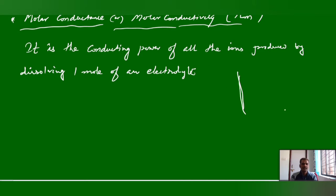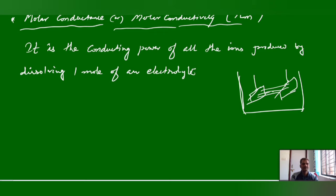Alternatively, consider an electrolytic cell with two parallel plates. The conductance of all ions present in the unit volume containing 1 mol of electrolyte, placed between two parallel plates of 1 unit length and 1 unit cross-sectional area — that overall conducting power is called Molar Conductance.